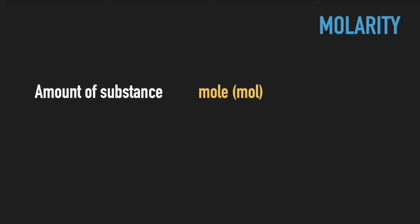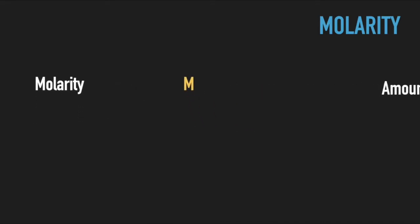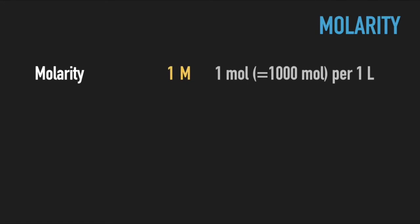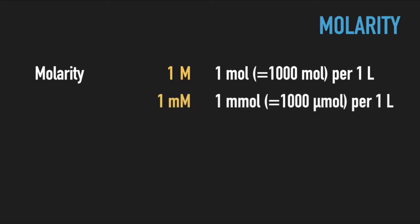Notice that when we refer to the amount of substance — the number of moles — we write 'mole.' When we talk about molar concentration or molarity, we use capital M and the corresponding prefixes. For example, one molar solution refers to one mole or one thousand millimoles of a reagent per liter. One millimolar solution corresponds to one millimole or one thousand micromoles per liter, and so on.